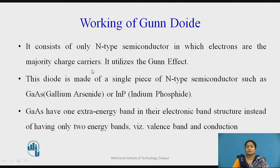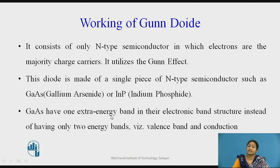This diode is made of a single piece of n-type semiconductor material, such as gallium arsenide or indium phosphide. Gallium arsenide and indium phosphide have high electron mobility, which is why they are used in constructing the Gunn diode. Gallium arsenide has one extra energy band in the electron band structure, instead of having only two energy bands — the valence band and the conduction band.